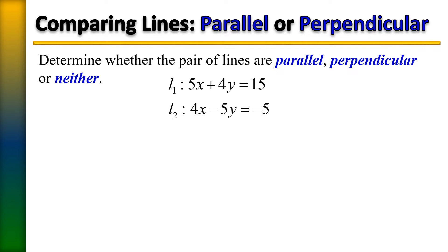So, since both lines are written in standard form, the first thing we need to do here is to rewrite both lines into slope-intercept form so that we can compare their slopes.